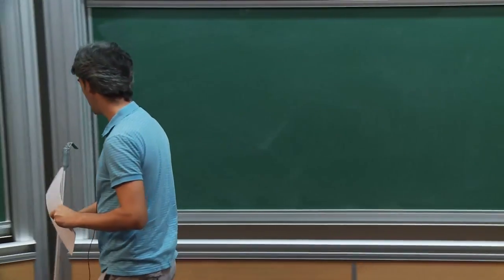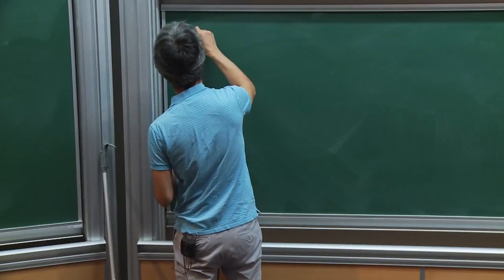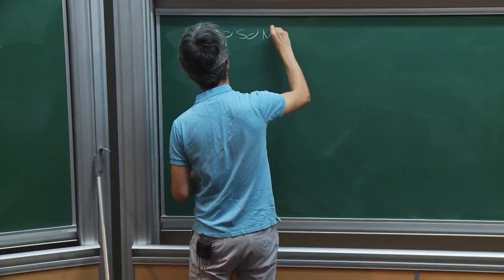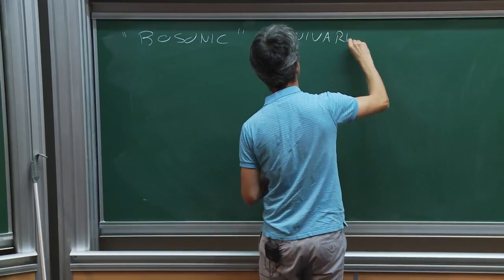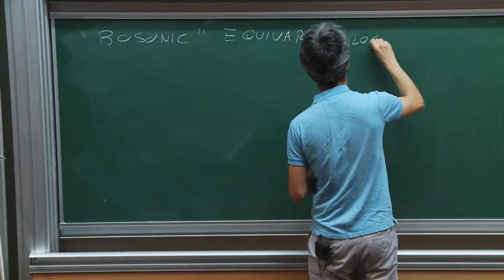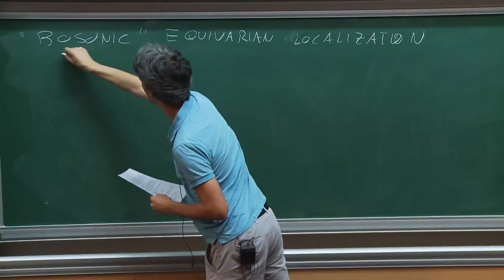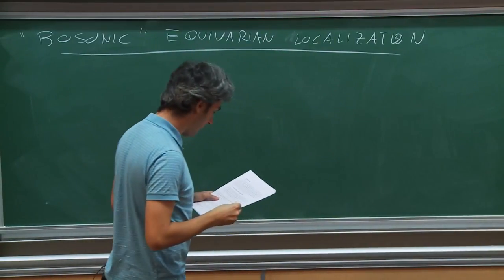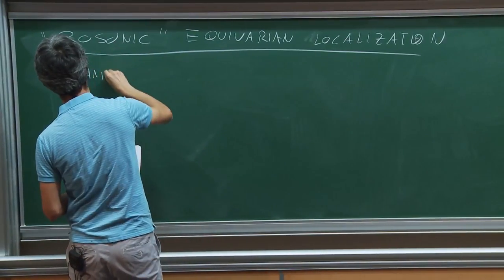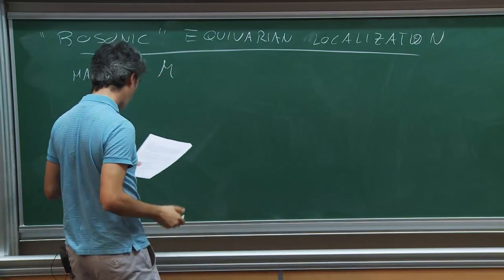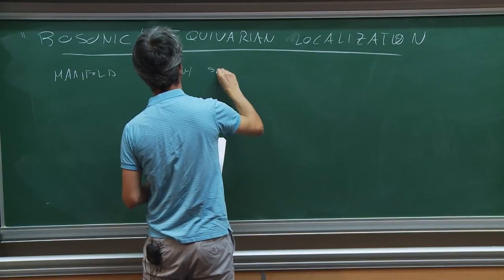I will start discussing what we can call, from a modern perspective, bosonic equivariant localization. Suppose that we want to compute some integral on some manifold M, and on this manifold we have some symmetry G, some isometry.